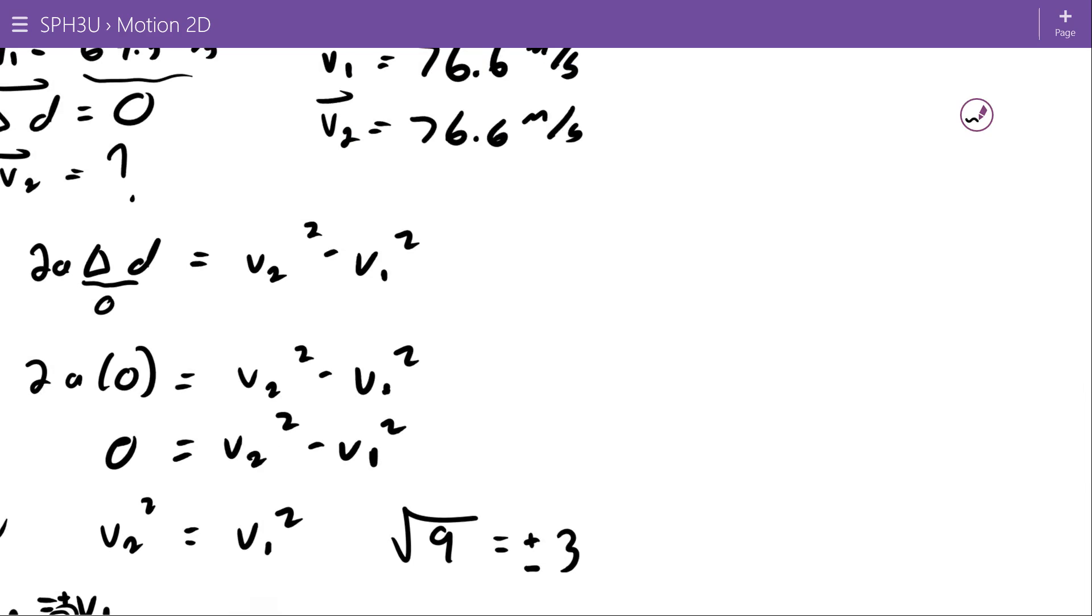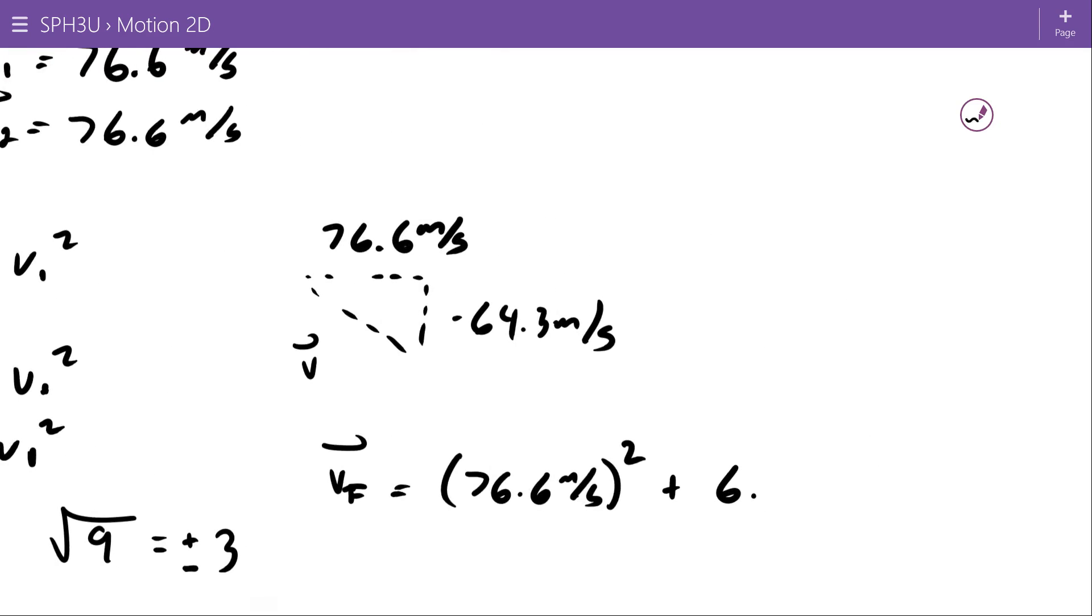If we go to recombine, 76.6 meters per second and negative 64.3 meters per second. My V here, to get its magnitude, I can use the Pythagorean Theorem. V, I'll call it V total or V final, is going to be equal to 76.6 meters per second squared, plus 64.3 meters per second squared, and I'll put the big square root on that. And you can punch all that in if you want, but I know the answer is going to be 100 meters per second.